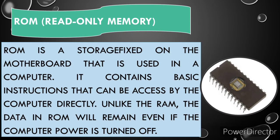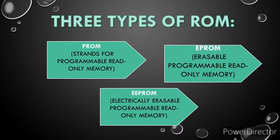ROM, or read-only memory, is a storage fixed on the motherboard that is used in a computer. It contains basic instructions that can be accessed by the computer directly. Unlike RAM, the data in ROM will remain even if the computer power is turned off. There are three types of ROM: the first is PROM, which stands for Programmable Read-Only Memory; the second is EPROM, which means Erasable Programmable Read-Only Memory; and the last one is EAPROM, which also means Erasable Programmable Read-Only Memory.